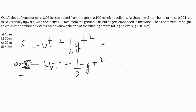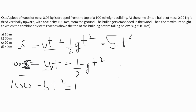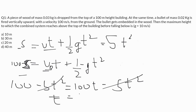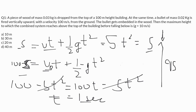Solving the first equation with g equals 10: S equals 5T squared. Substituting into the second equation: 100 minus 5T squared equals 100T minus 5T squared. The 5T squared terms cancel, giving T equals 1 second. So the displacement of the wooden block is 5 times 1 squared equals 5 meters, and the displacement of the bullet is 100 minus 5 equals 95 meters.